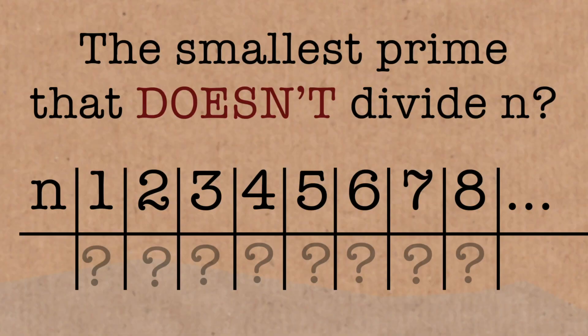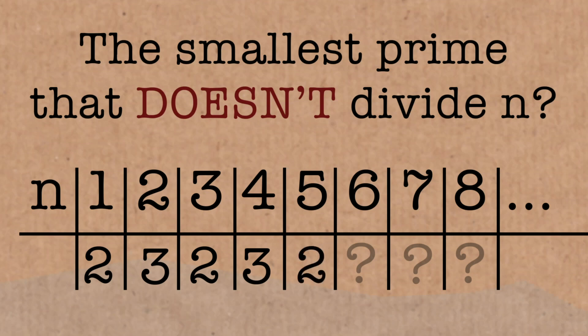So for 1, the smallest prime that doesn't divide 1 is 2. Smallest prime that doesn't divide 2 is 3. The smallest prime that doesn't divide 3 is 2. Smallest prime that doesn't divide 4 is 3. Smallest prime that doesn't divide 5, 2. Smallest prime that doesn't divide 6, can't be 2, can't be 3, that one's a 5, and then it's a 2 here, and a 3 here, and so on. So that's a sequence.